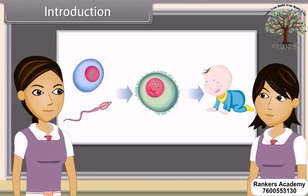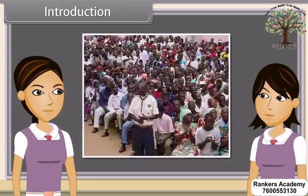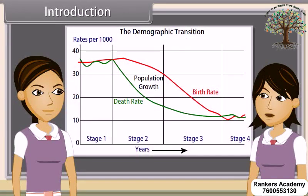As we have already discussed, reproduction is the ability of all organisms to produce young ones similar to themselves in most characters. For the process of reproduction, we have to make sexual contact. But if we do this without any protection, then many diseases are spread from an infected partner. Due to rapid growth in population, we observe population explosion, mainly due to rapid decline in death rate and increase in lifespan.